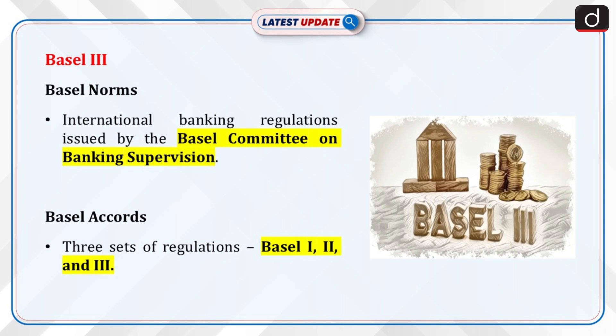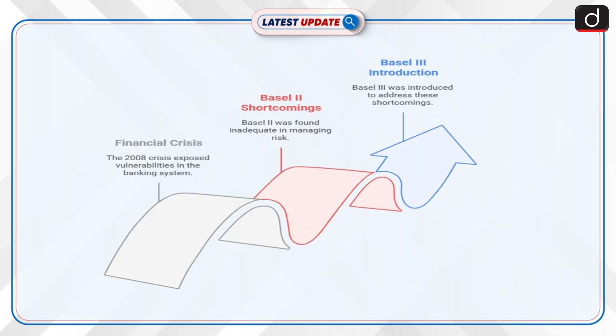Now let's discuss Basel 3. Basel norms or Basel Accords are the international banking regulations issued by the Basel Committee on Banking Supervision. The Basel Committee has issued three sets of regulations known as Basel 1, 2, and 3. In 2010, Basel 3 guidelines were released, introduced in response to the financial crisis of 2008. A need was felt to further strengthen the system as banks in developed economies were undercapitalized, overleveraged, and had a greater reliance on short-term funding. It was also felt that the quantity and quality of capital under Basel 2 were deemed insufficient to contain any further risk.